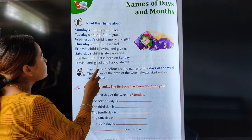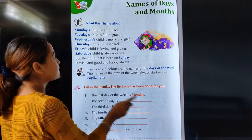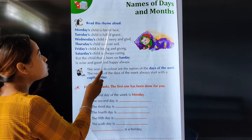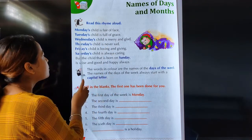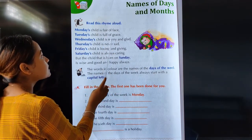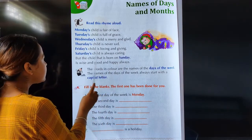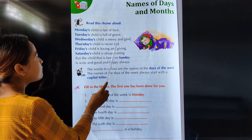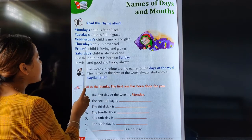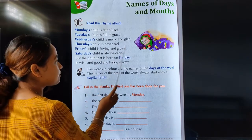Monday's child is fair of face. Tuesday's child is full of grace. Wednesday's child is merry and glad. Thursday's child is never sad. Friday's child is loving and giving.